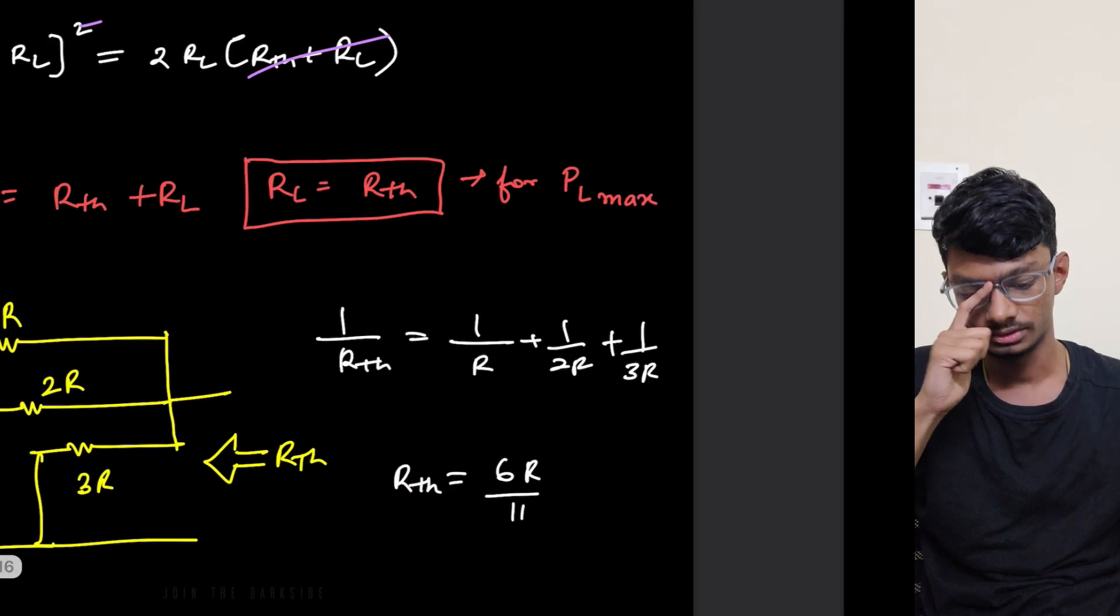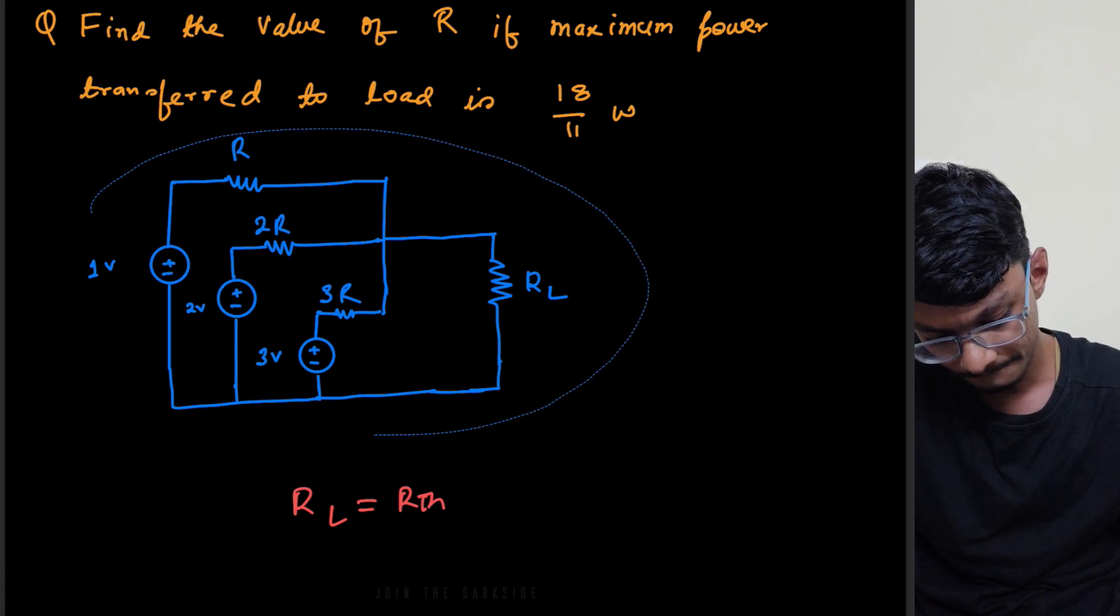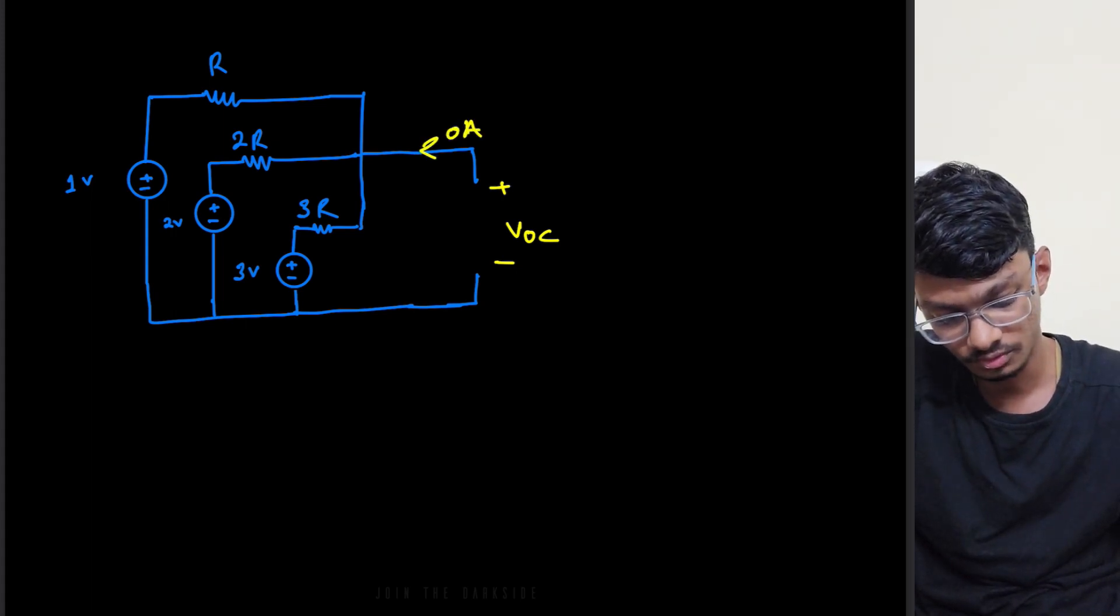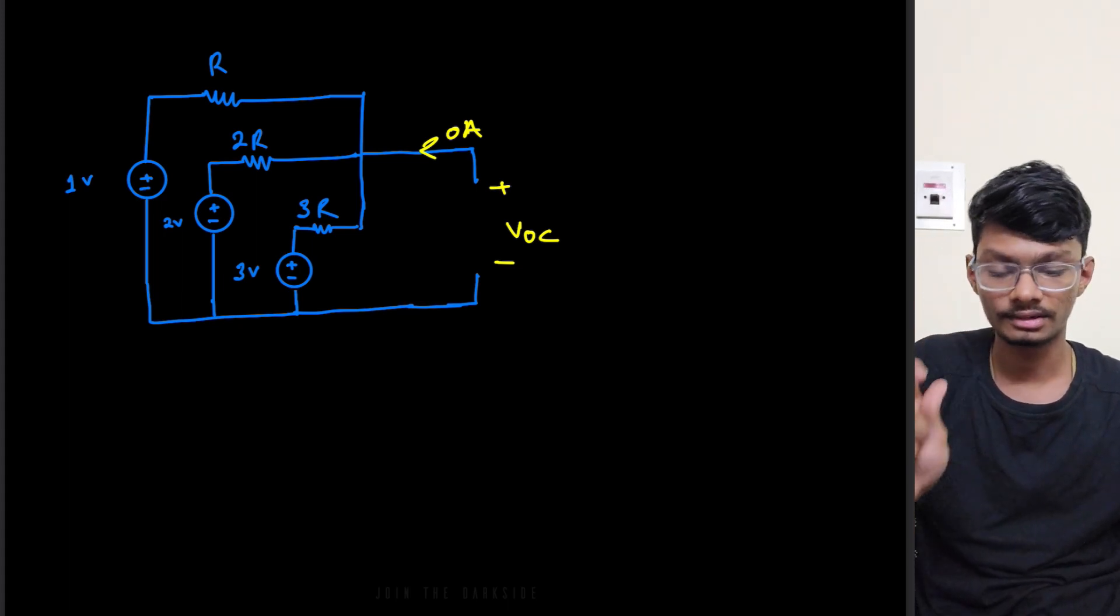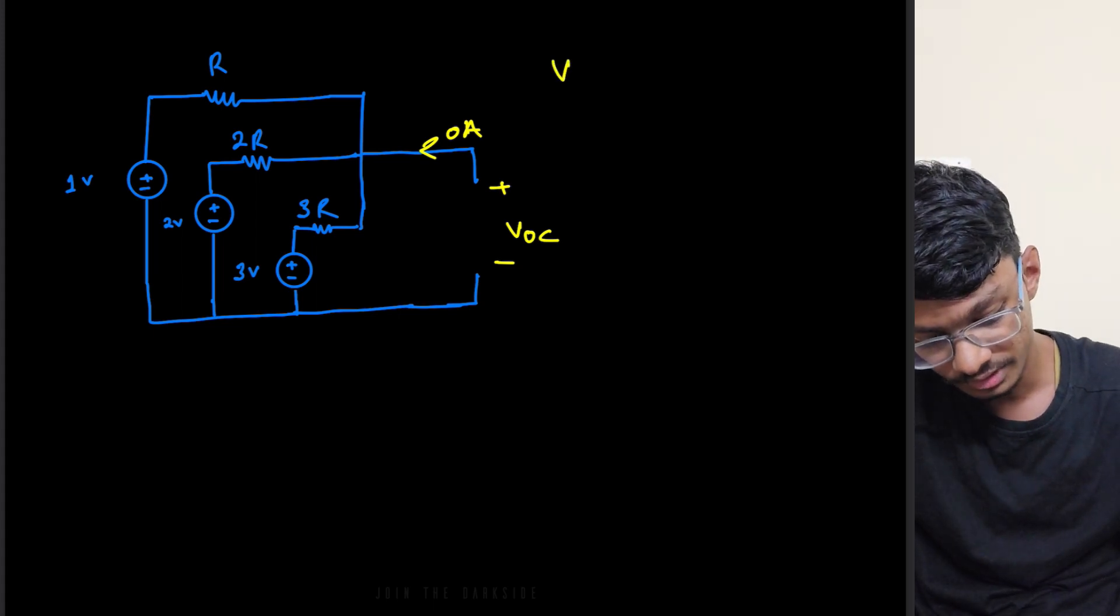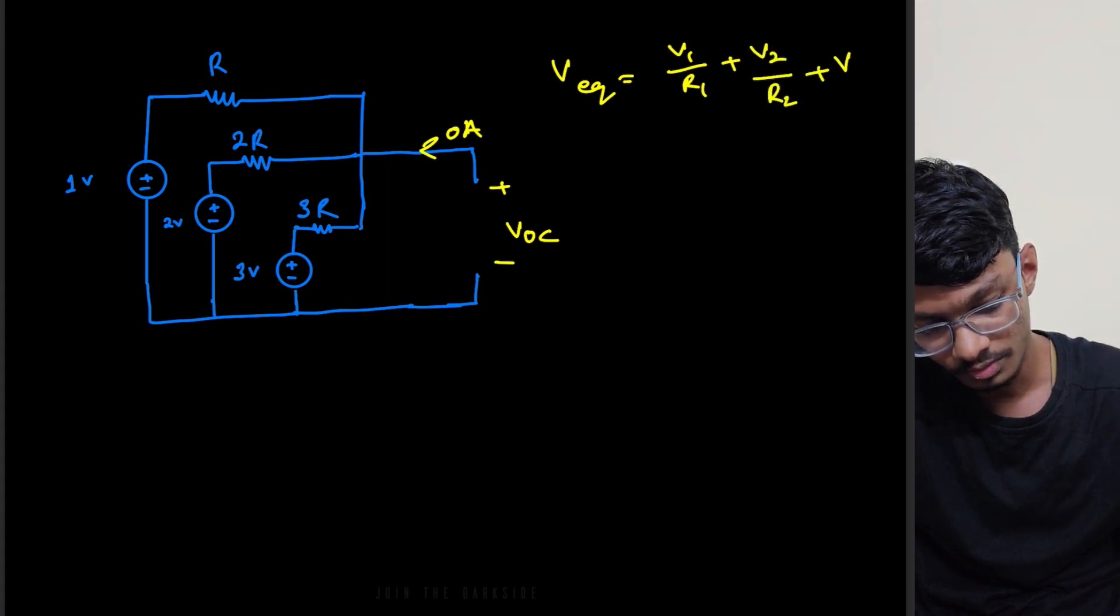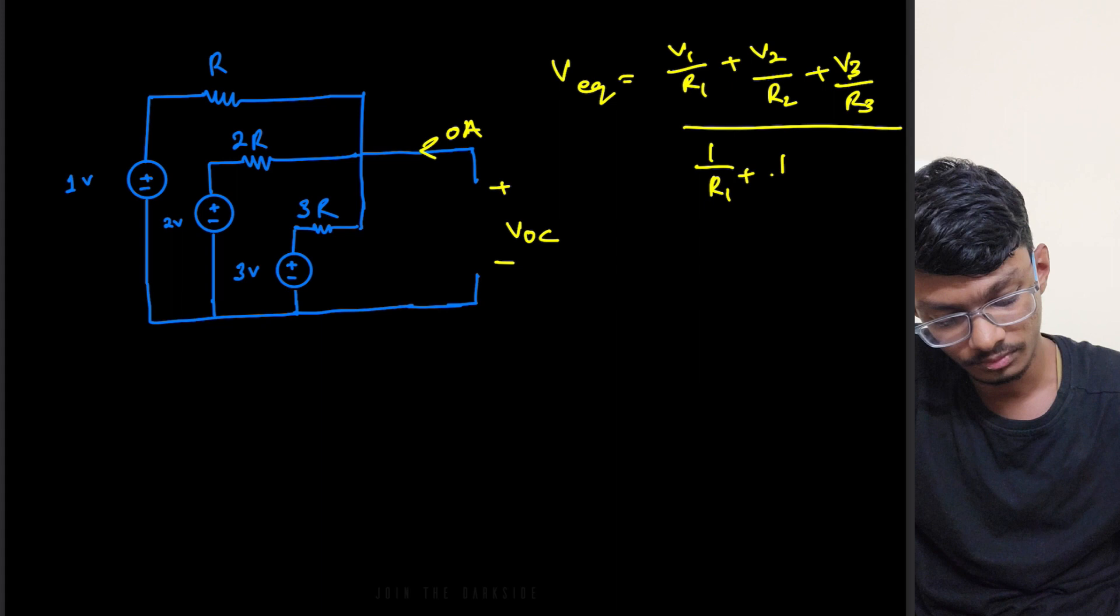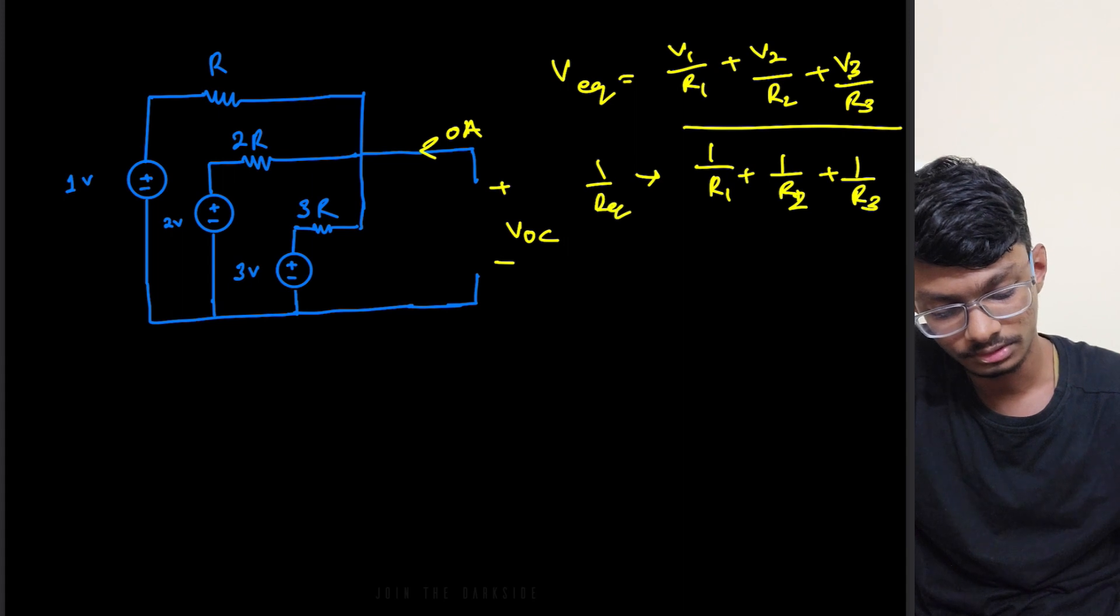Now let's find the Vth for this circuit. So for Vth we are just calculating the open circuit voltage so current through here is zero. So basically we have one formula for equivalent voltage when they are in parallel connected like this. So the formula basically is V equivalent equals to V1 by R1 plus V2 by R2 plus V3 by R3. You can derive it for yourself also. Now in the denominator: 1 by R1 plus 1 by R2 plus 1 by R3. This is basically 1 by R equivalent.